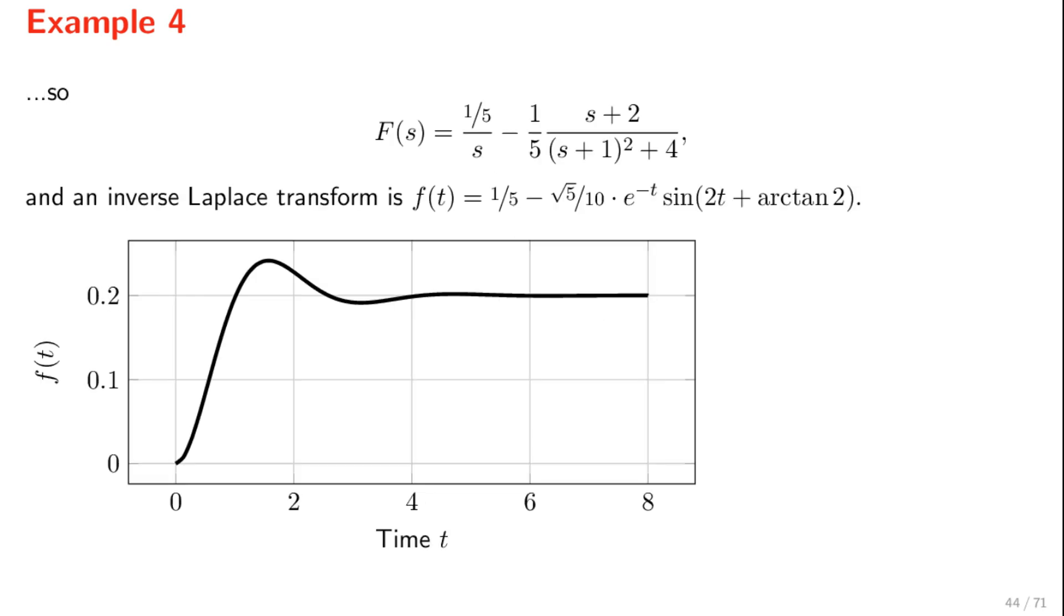This means that we can write f in this form, and the inverse Laplace transform of f is given by this function. This function involves a sine, which produces an oscillatory behavior. It involves the exponential function e to the minus t, which makes the oscillation taper off as time progresses. And lastly, there is a constant term, which makes f of t converge towards 0.2.